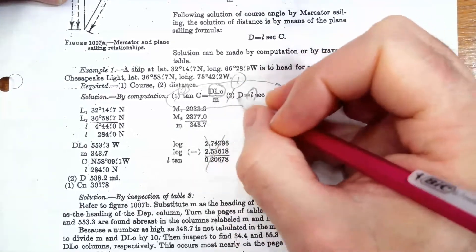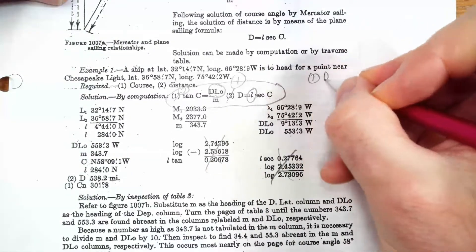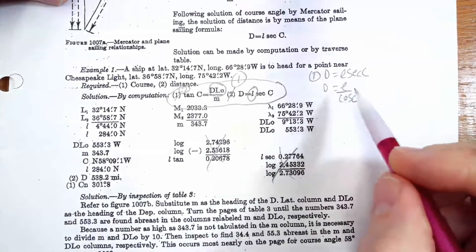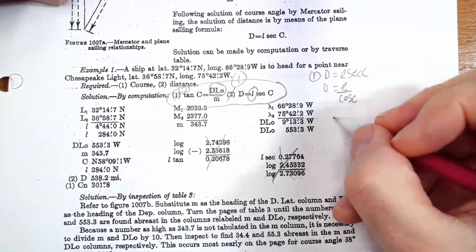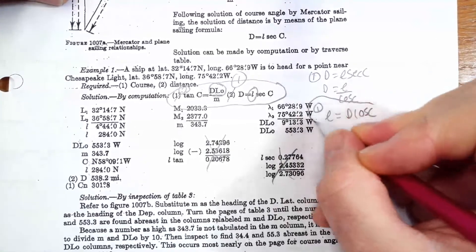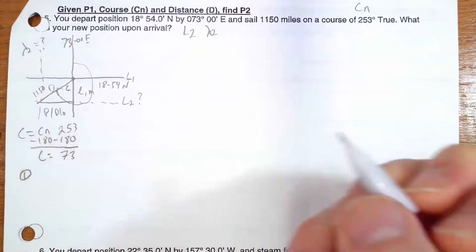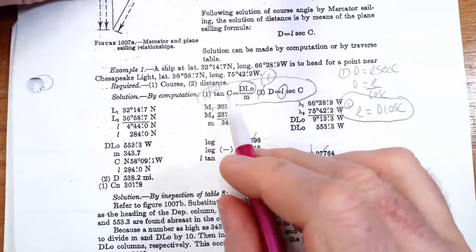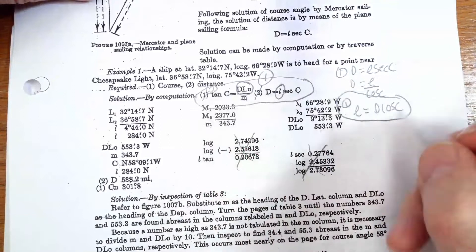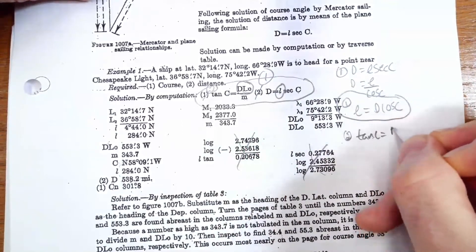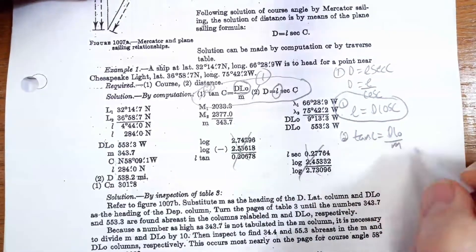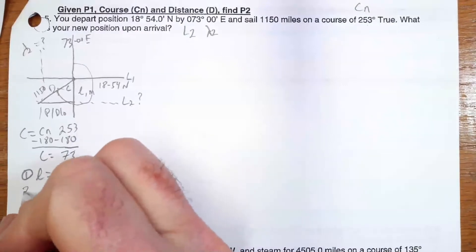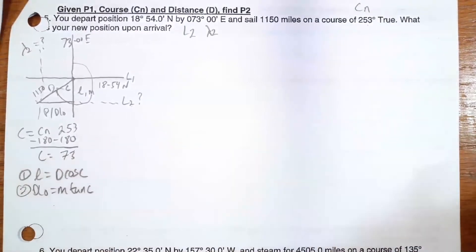First formula: starting from D equals L secant C, which is the same as D equals L over cosine C, I solve for L by multiplying both sides by cosine C, giving me L equals D cosine C. That's formula one. Second formula: starting from tan C equals D-low over M, I solve for D-low by multiplying both sides by M, giving me D-low equals M tan C. That's formula two.